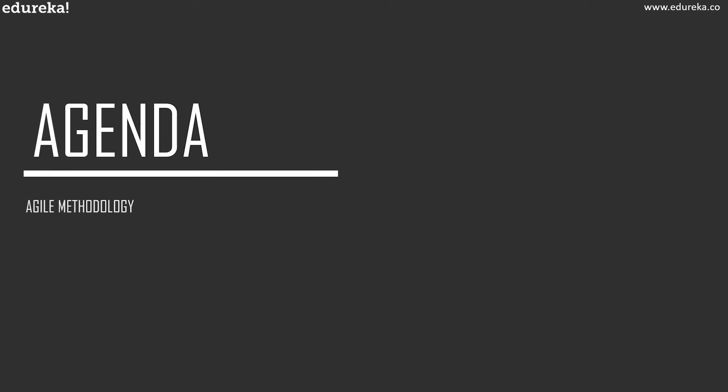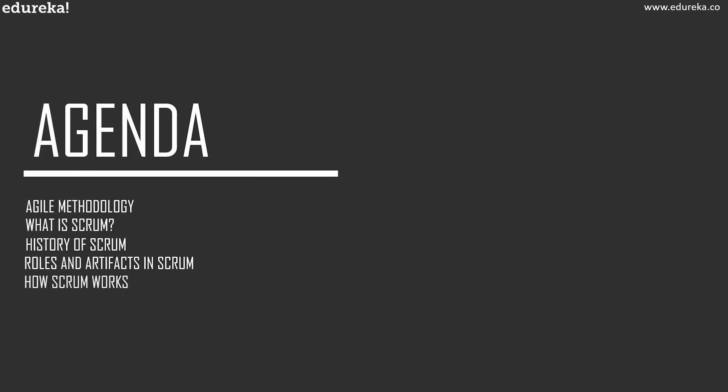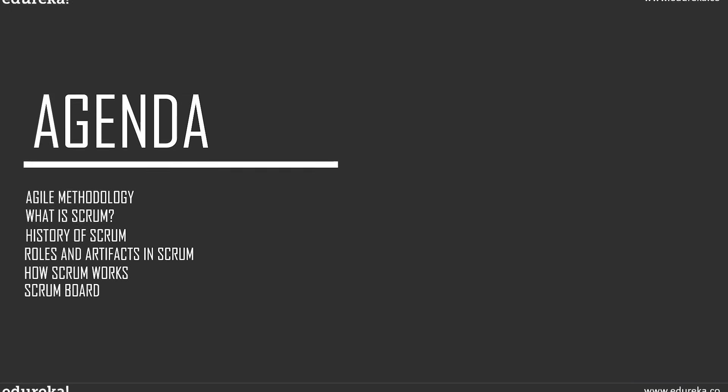We will begin this session with a brief discussion on Agile methodology. Then we will move on to today's topic, which is Scrum. We will discuss what Scrum is, a bit about the history of Scrum, different roles, events, and artifacts involved in Scrum, how the Scrum process actually works, and finally we will conclude with a brief discussion on the Scrum board.